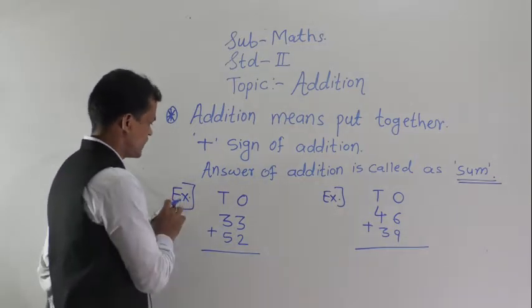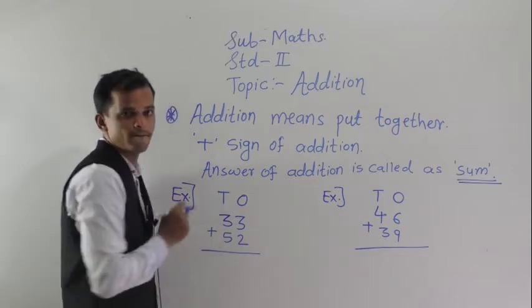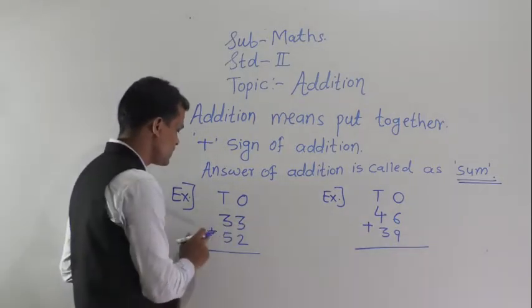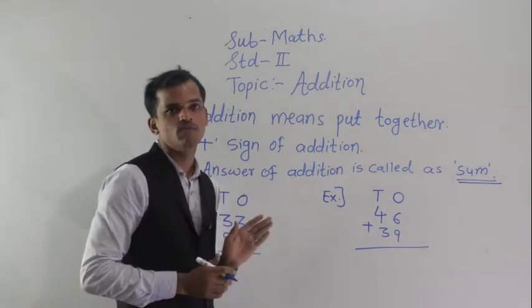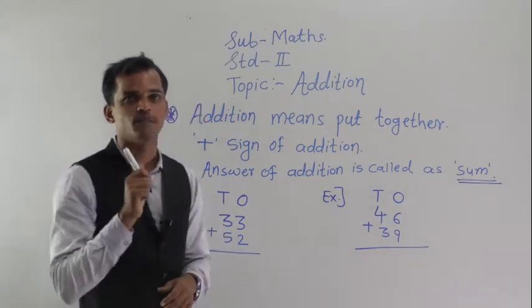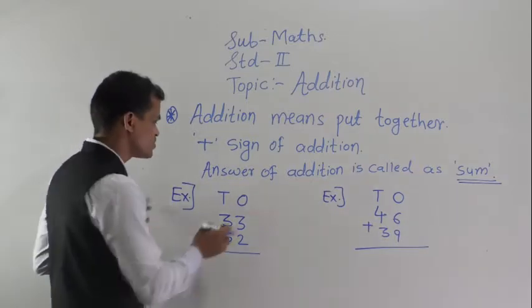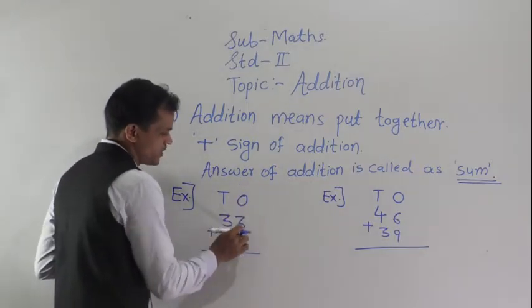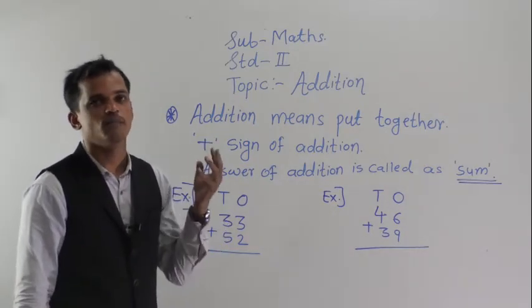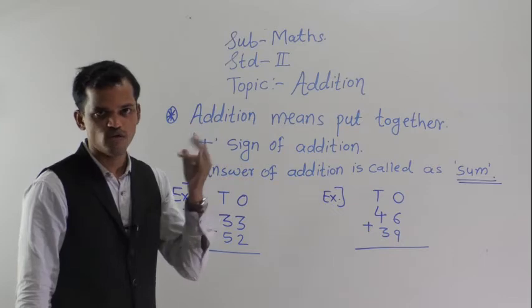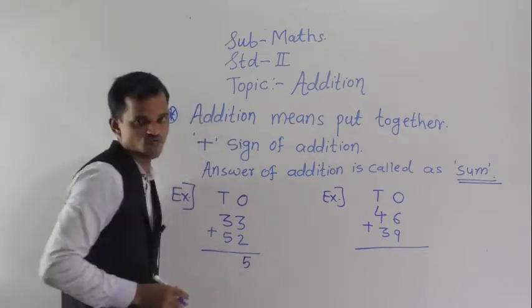See example: 33 plus 52. Always remember to start from the ones place, that is the extreme right side. Add this column: 3 plus 2. After 3, count 2 fingers forward — 4, 5. So 3 plus 2 equals 5.